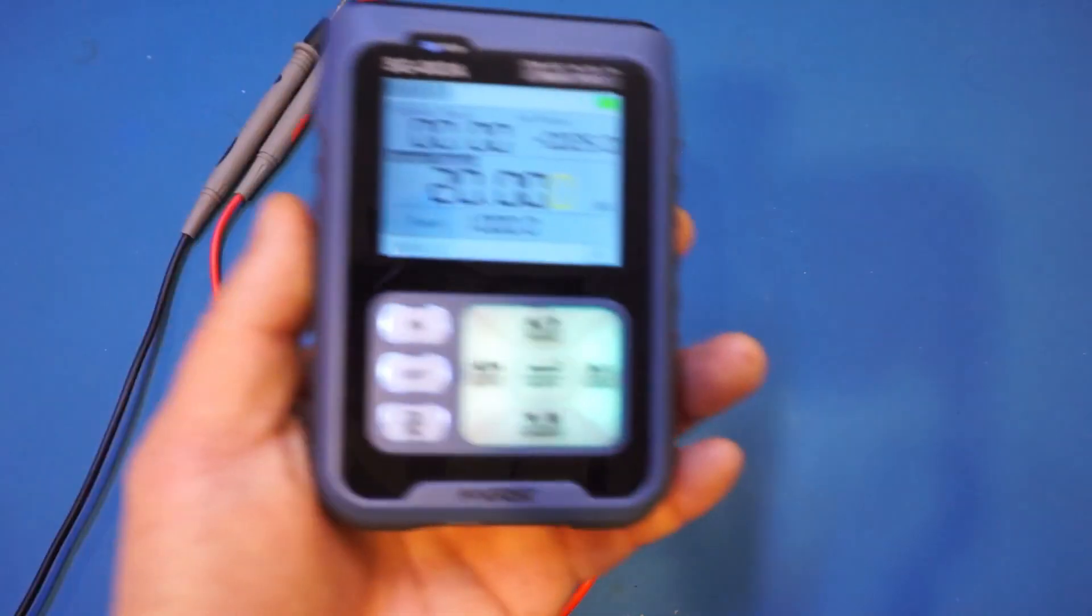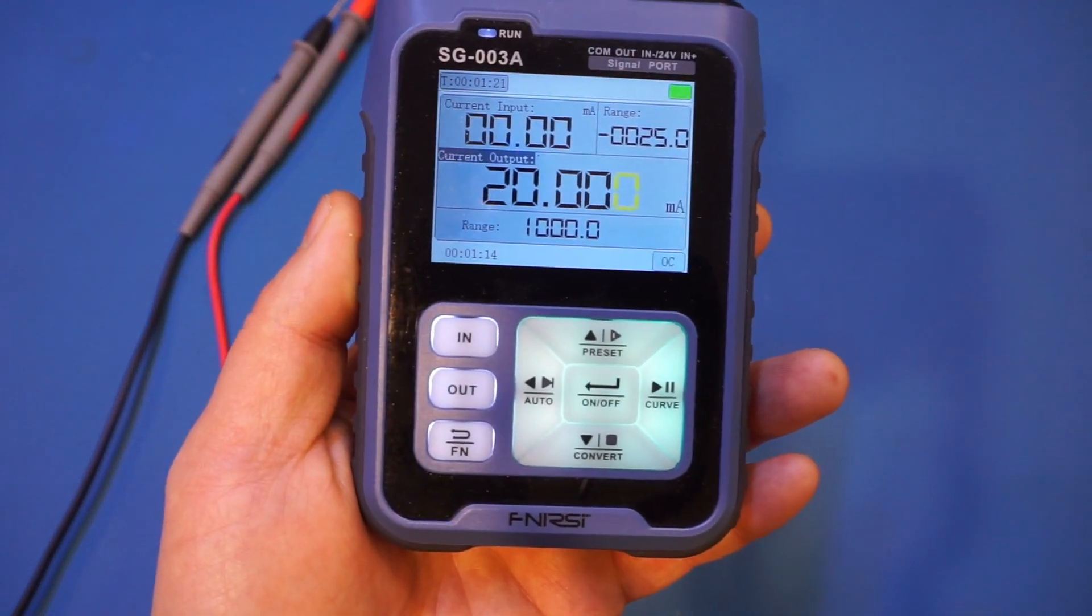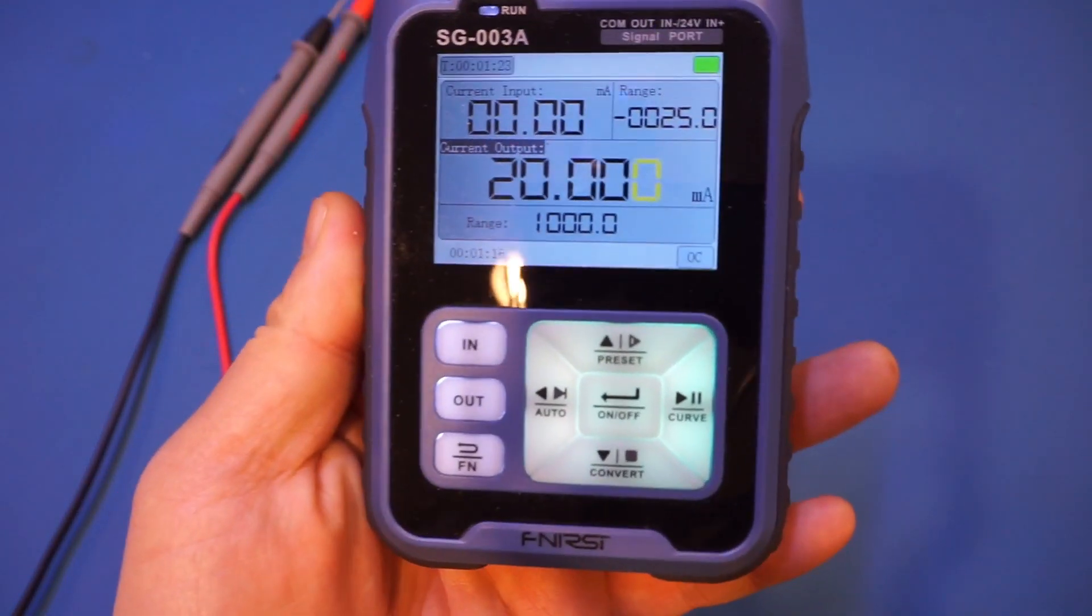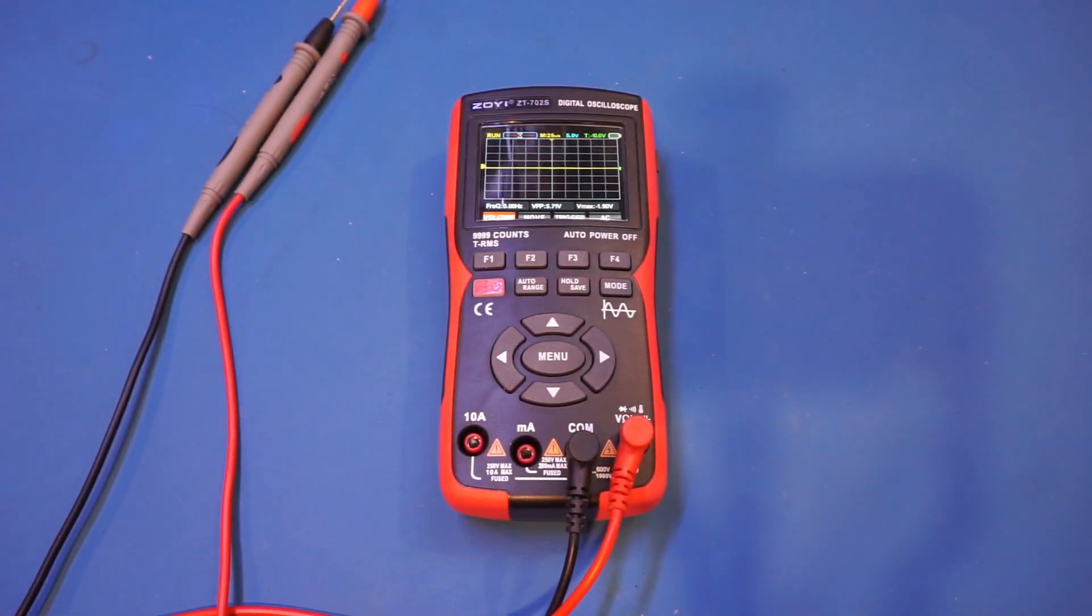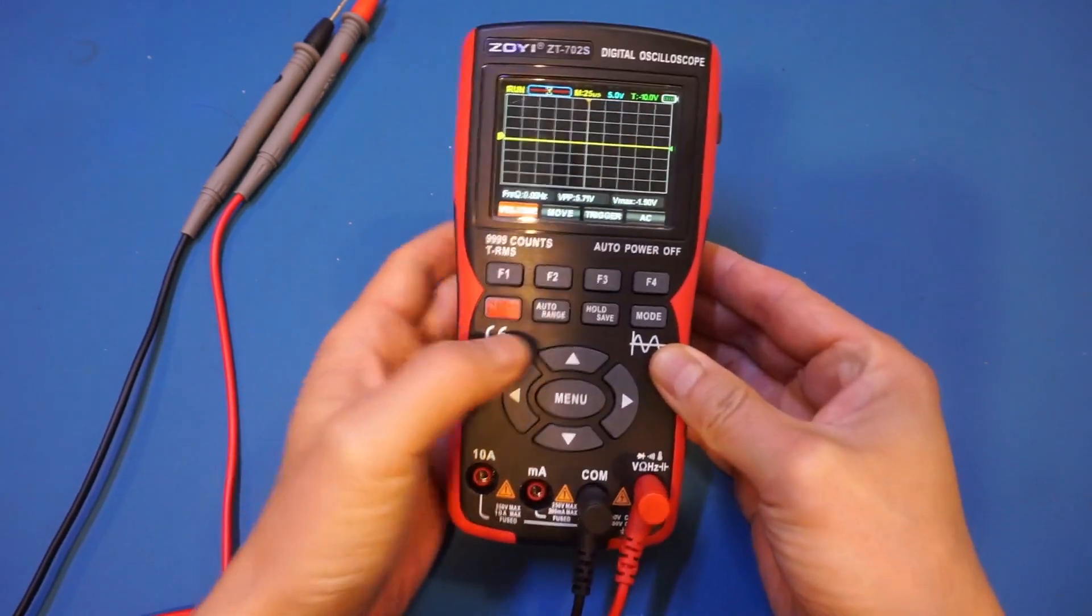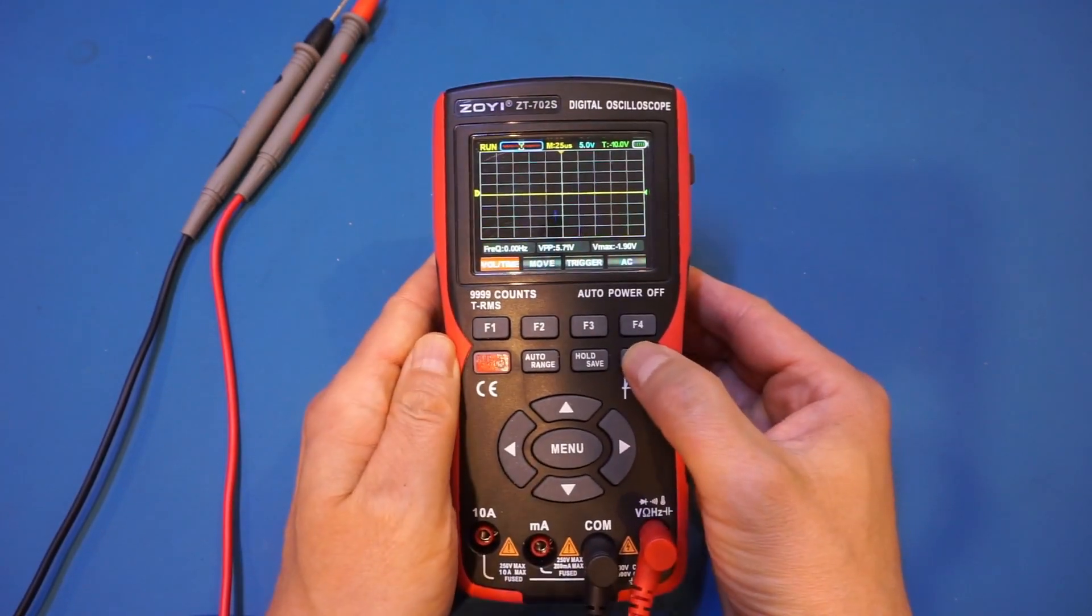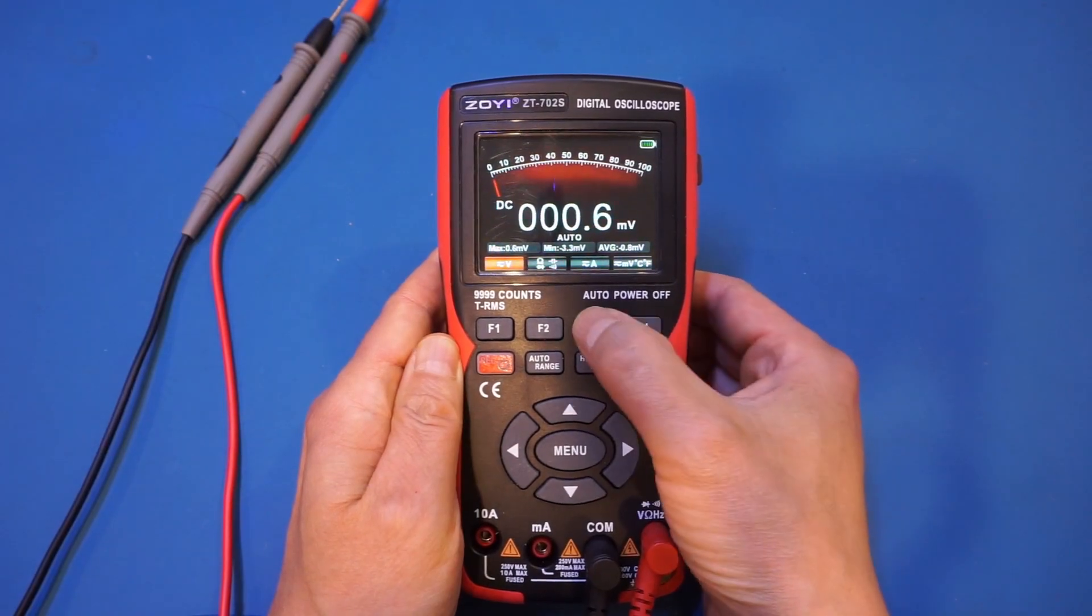Here I have a current source outputting 20 milliamps or thereabout. The actual value doesn't really matter that much. Let me switch the ZT702 into current mode and do some measurement here. So let's press mode, and first we switch into multimeter and current.